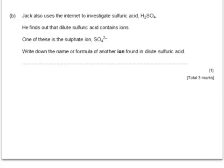Jack also uses the internet to investigate sulfuric acid H2SO4. He finds out that dilute sulfuric acid contains ions. One of these is the sulfate ion SO4 2-. Write down the name or formula of another ion found in dilute sulfuric acid. When we look at the formula, it's made up of SO4, but it's also made up of H2. This has two hydrogen ions. So the other ion found in sulfuric acid is the H+ ion, which is found in all acids.